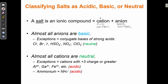Things that have a positive charge are more likely to be acids, and things with a negative charge are more likely to be bases. Almost all anions are basic. The only exceptions are the conjugate bases of strong acids. We only have six strong acids: HCl, HBr, HI, H₂SO₄, HNO₃, and HClO₄. Their conjugate bases — Cl⁻, Br⁻, I⁻, HSO₄⁻, NO₃⁻, and ClO₄⁻ — are the six neutral anions. Every other negatively charged ion is basic.